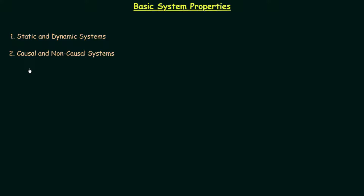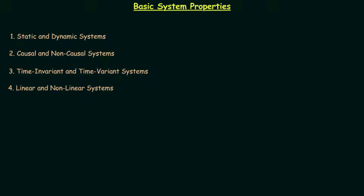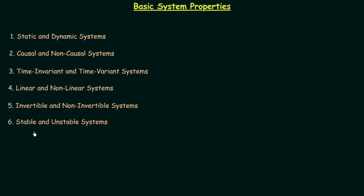After this we will discuss causal and non-causal systems. The third one is time-invariant and time-variant systems. After this we have linear and non-linear systems. The fifth one is invertible and non-invertible systems, and the last one is stable and unstable systems.